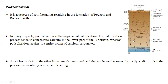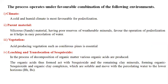Podzolization is the formation of podzols. In this process, all bases are completely leached off and the entire soil becomes distinctly acidic — it is also called acid leaching. This process takes place in cold and humid climates, and is favored by siliceous parent materials and coniferous pine vegetation.